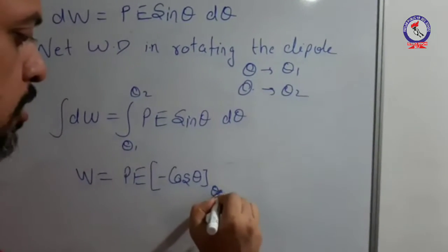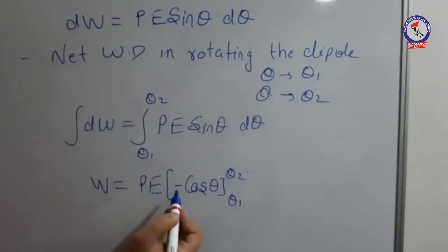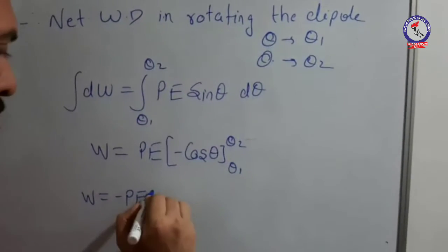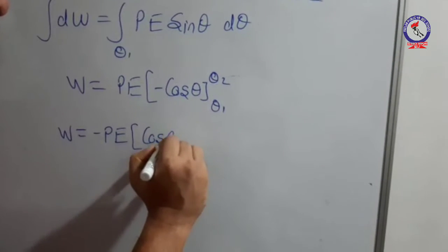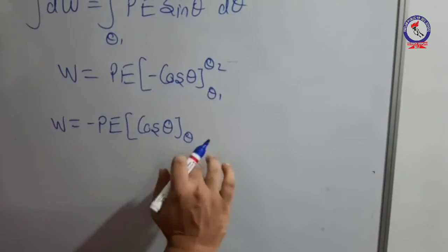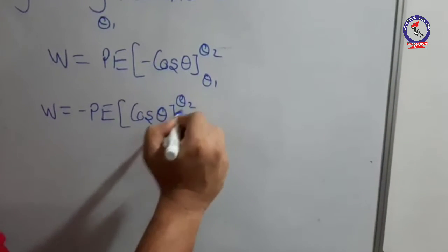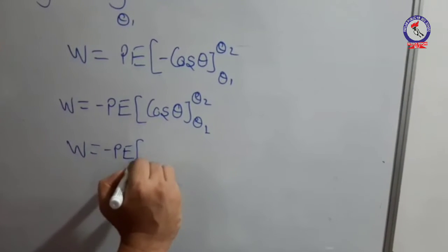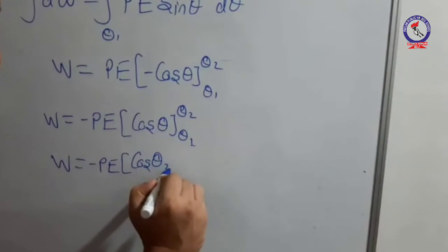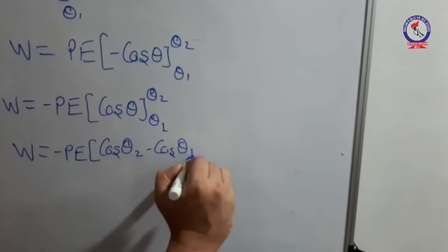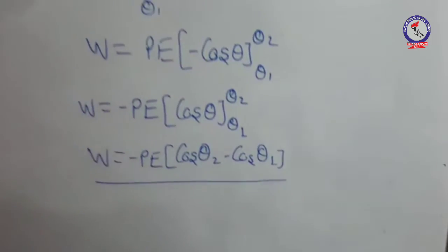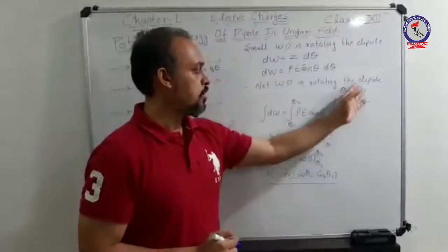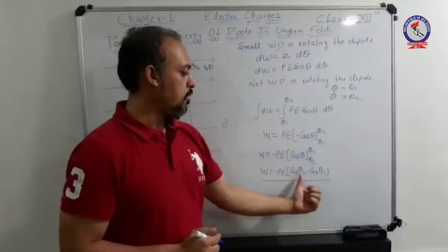Integration of Pe sinθ gives minus Pe cosθ, evaluated from limits θ₁ to θ₂. Taking the negative sign outward: minus Pe [cosθ₁ to cosθ₂], which gives minus Pe cosθ₂ minus cosθ₁. So this is the expression of work done in rotating the dipole from angle θ₁ to θ₂: W = minus Pe (cosθ₂ minus cosθ₁).